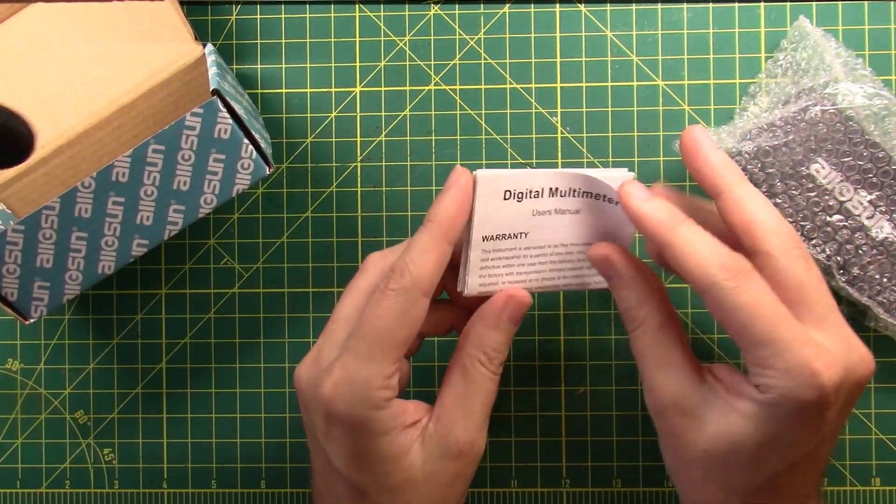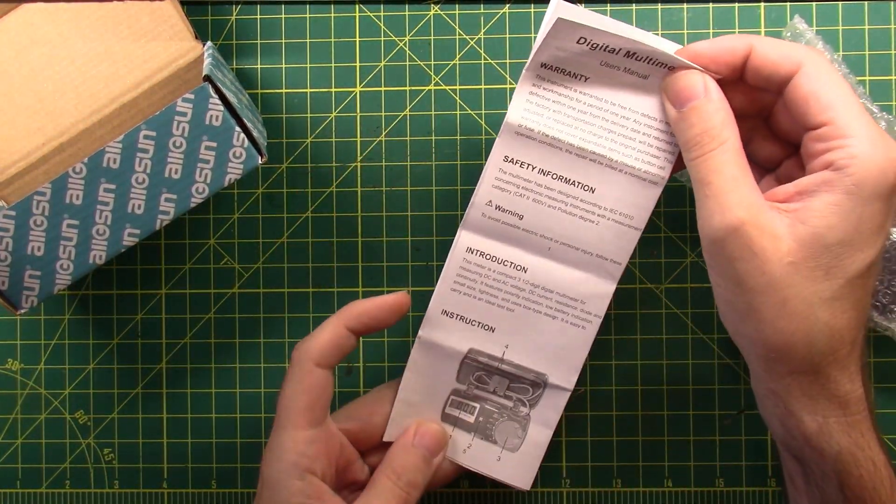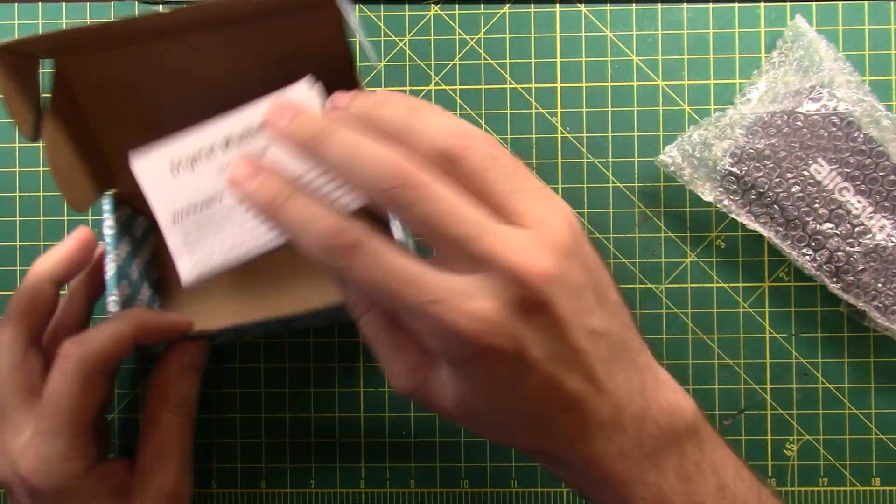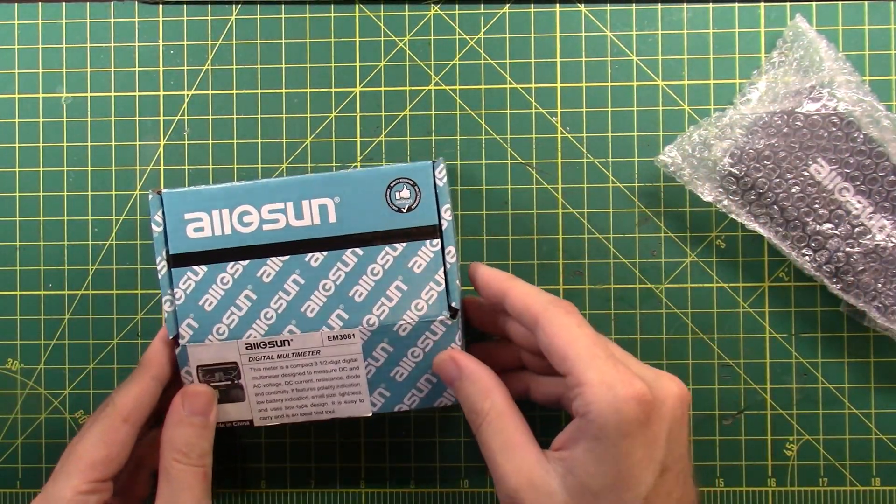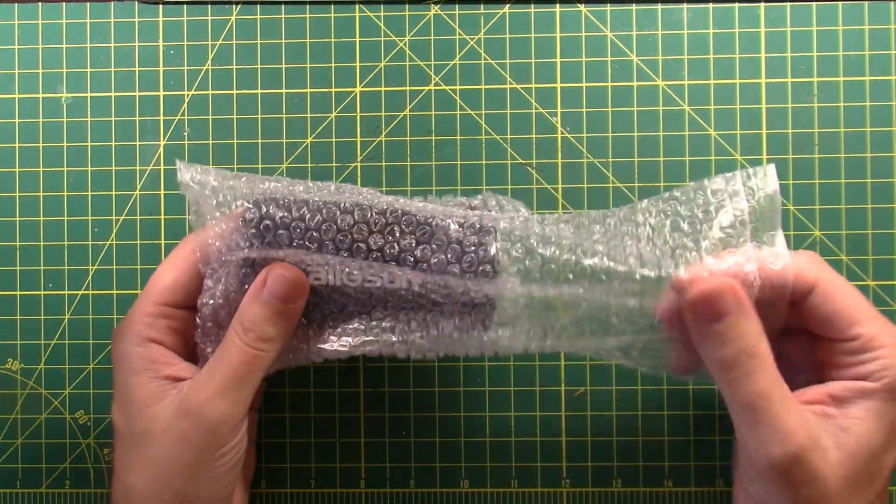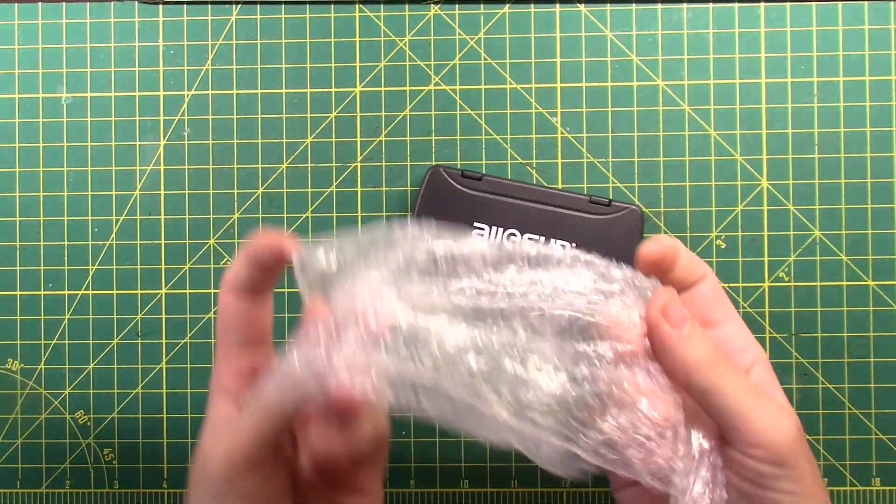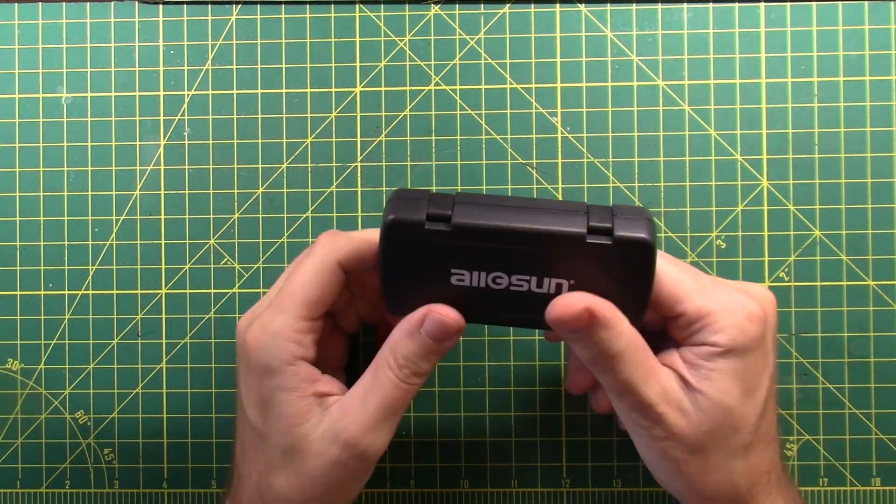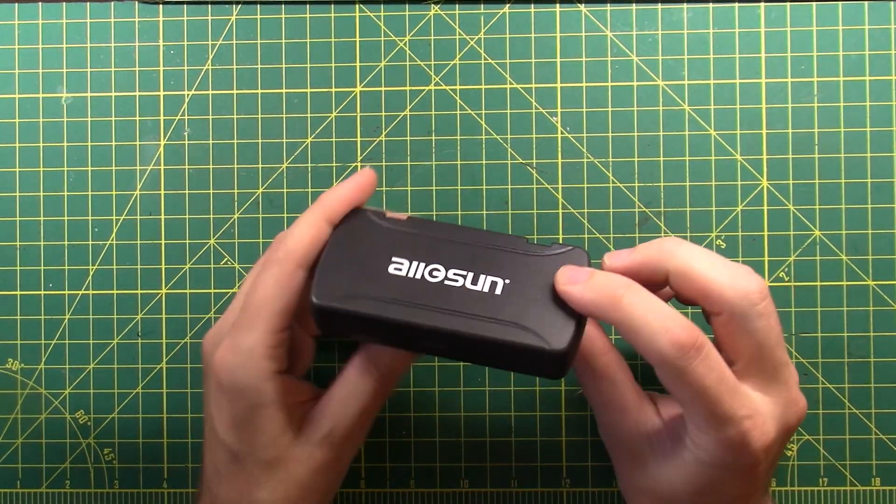There is a little user's manual inside. Who needs a user's manual? So that takes care of that. Let's get rid of that. And then it comes in this nice little bubble wrap pouch. Let's get rid of that. And it's pretty much the same size and shape.